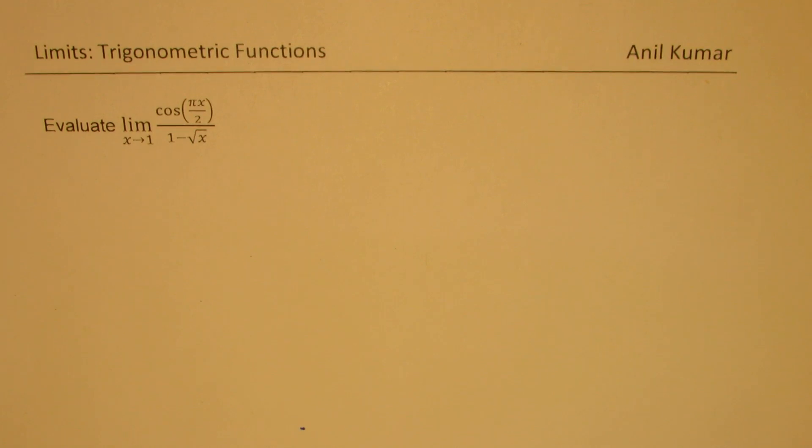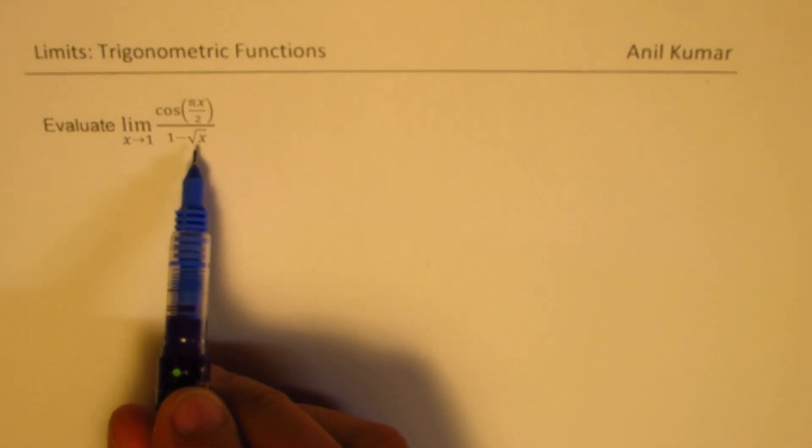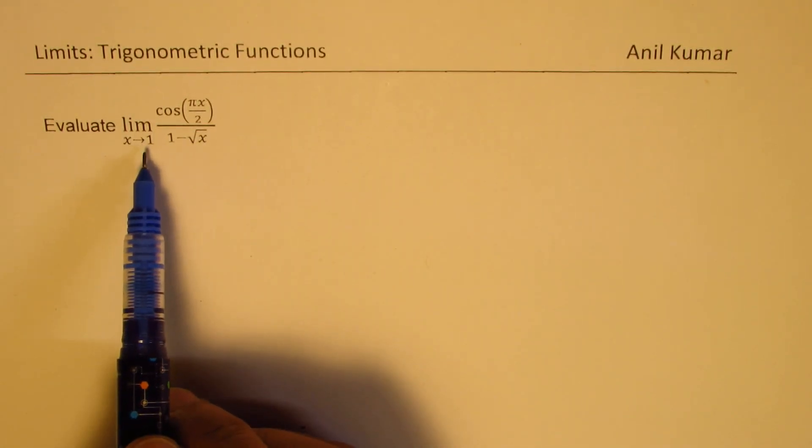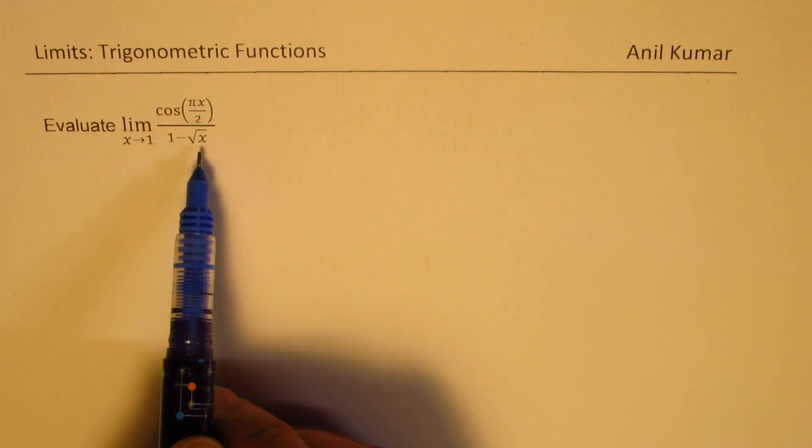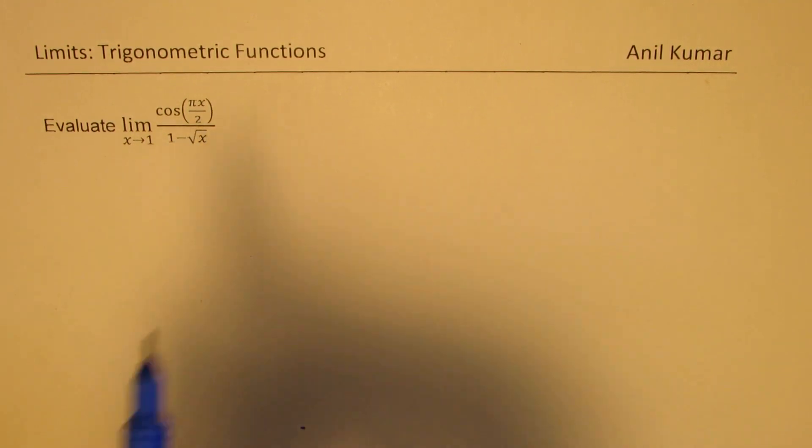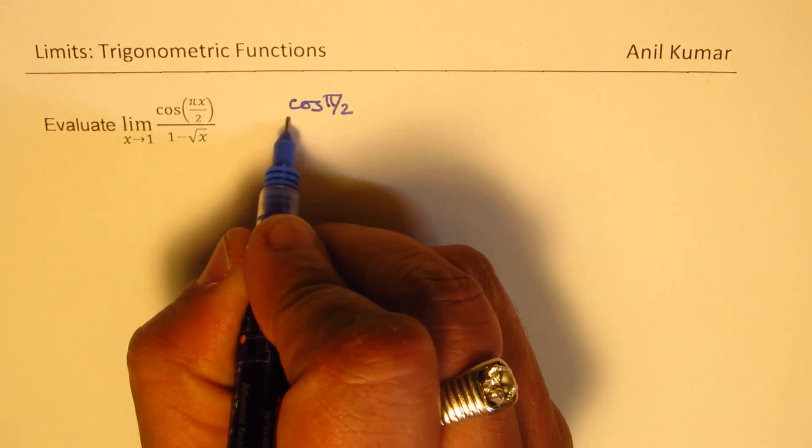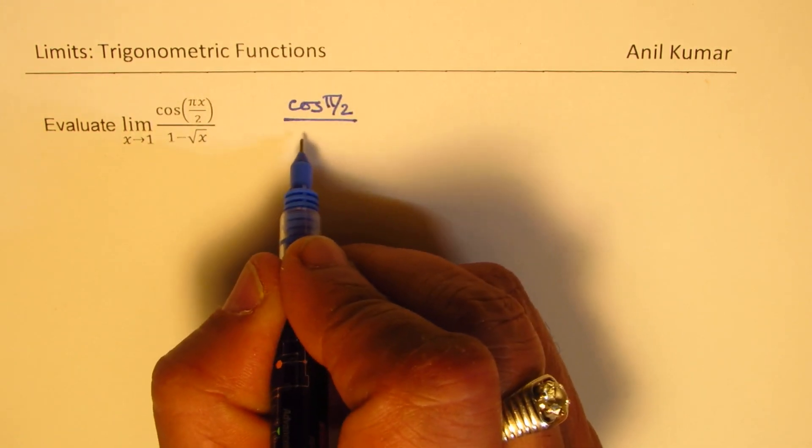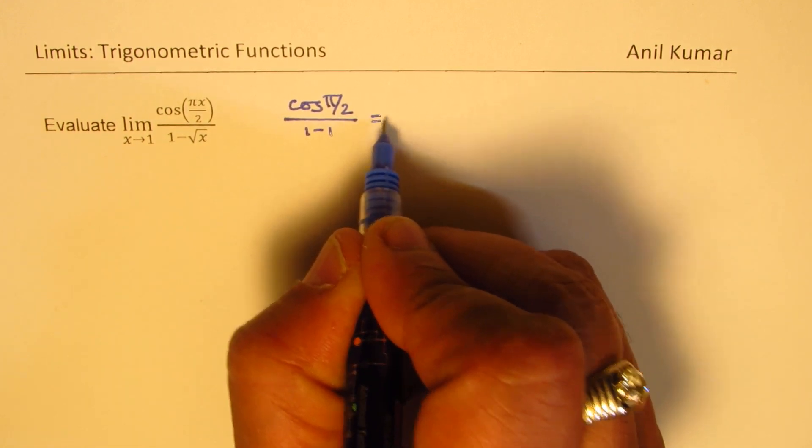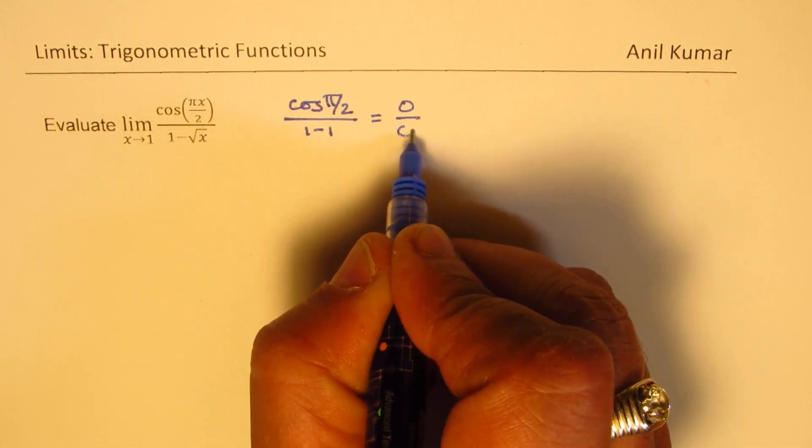Now it looks like a difficult question since we have square root x here. If I substitute 1 in both numerator and denominator, we get cos(π/2), which is 0. And in the denominator, we get 1 minus 1, so we do have the 0/0 form.